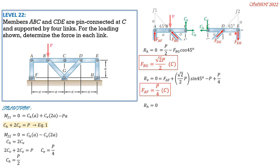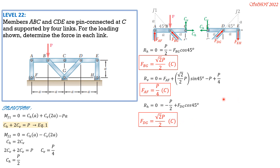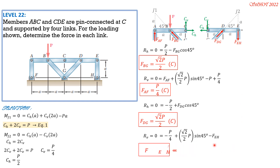In the right free body diagram, summation of horizontal forces equals zero: negative P/2 equals negative P/2 plus F_DG cos(45°). So F_DG is positive — the assumed compression is correct. F_DG equals (√2/2)P in compression. Finally, summation of vertical forces equals zero: negative C_V plus F_DG sin(45°) minus F_EH equals zero. F_EH equals positive P/4, confirming it is in tension as assumed in the FBD.